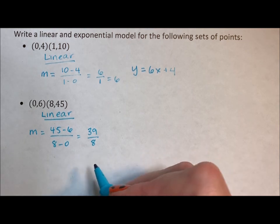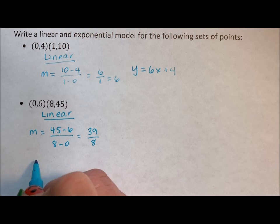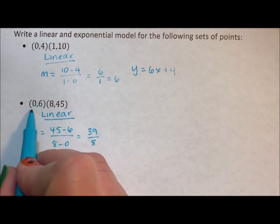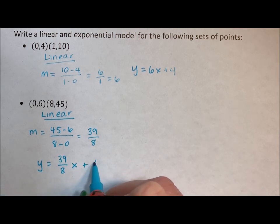There's no reason to do more work than we have to. So again, we have our y-intercept. So y equals 39 over 8x plus 6.